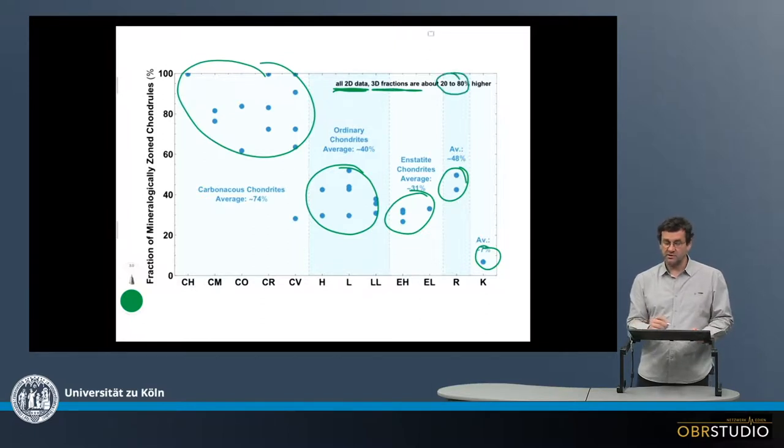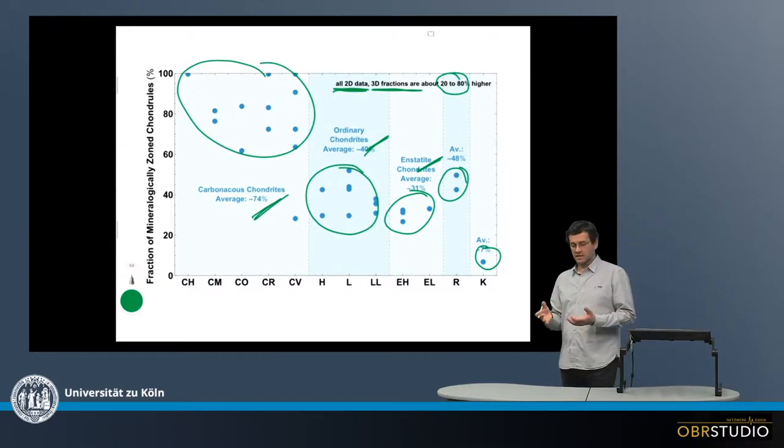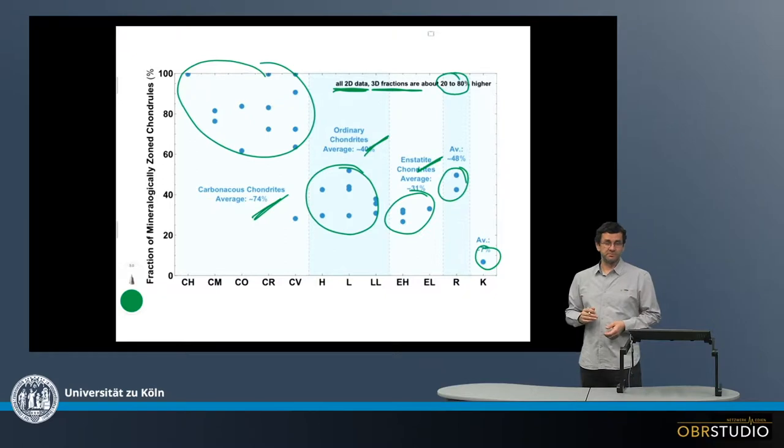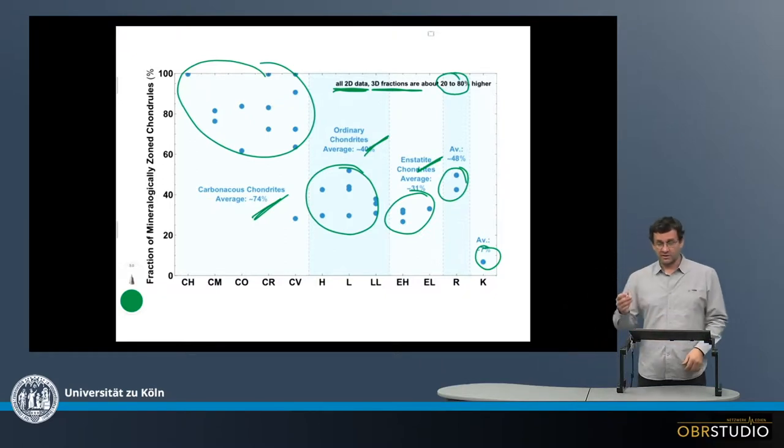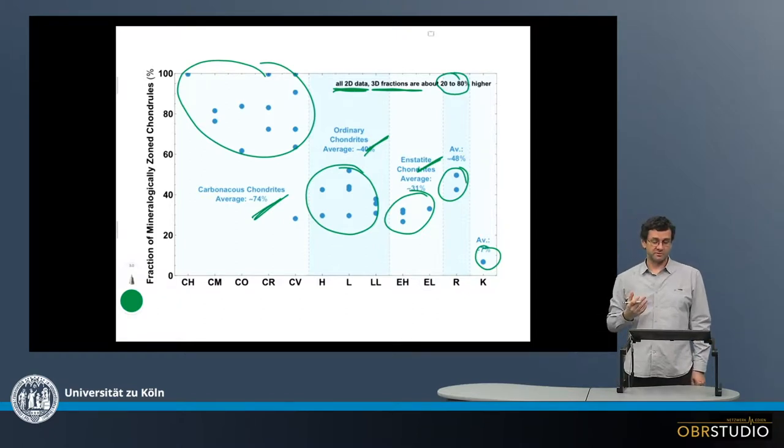Then we find that this is about 20 to 80% higher. 20% in the case of carbonaceous and ordinary chondrites. But in the case of enstatite chondrites it is up to 80% higher. The reason for this is that enstatite chondrites have very thick rims, and therefore we very often section this rim. So enstatite chondrites in fact might have something like maybe 40-50% zoned chondrules.